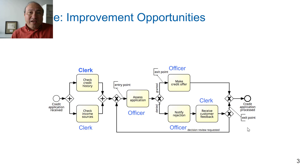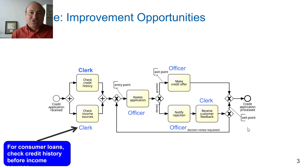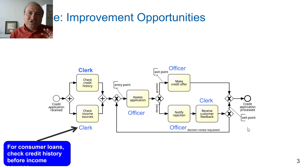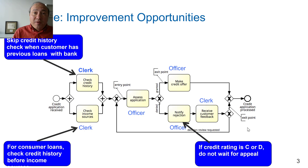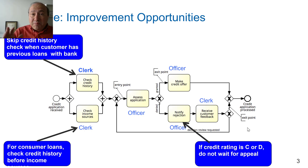By looking at the data behind the execution of this process, the search-based process optimizer will be able to find opportunities like the following: it can find that in the case of a consumer loan, it is better to first focus on checking the credit history before checking the income, as that perhaps reduces cost. Certain tasks could potentially be skipped — for example, the credit history check can be skipped if the customer has a previous loan with the bank and we have previously performed that check for the same customer. Or, in some cases, we will not accept appeals from the customer when their rating is below C or D.